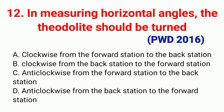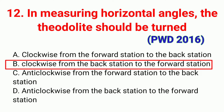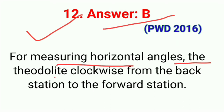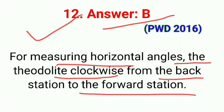Question number twelve: In measuring horizontal angles, the theodolite should be turned. The correct answer is option B: clockwise from the back station to the forward station. For measuring horizontal angles, the theodolite is turned clockwise from the back station to the forward station.